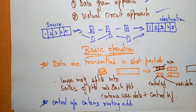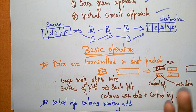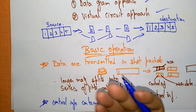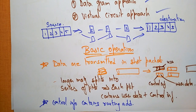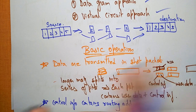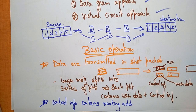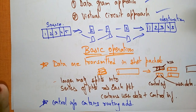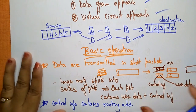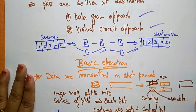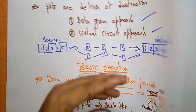So that is the basic operation. After transferring the data, on each switching node, packets are received, stored briefly — buffered — and passed on to the next node. This is called store-and-forward, and this is the basic operation of packet switching.